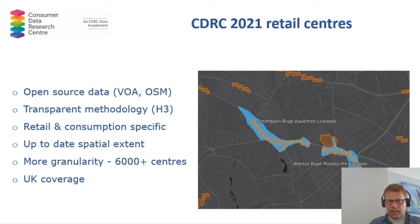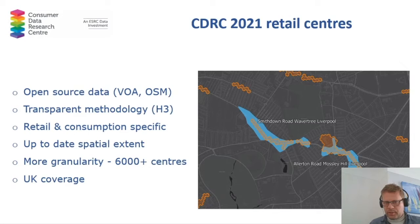Our retail centres are retail and consumption specific, so we do not include employment areas. The spatial extent is much better than previously and there is more granularity, with entire coverage of the UK. Looking at the same map as previously, we've got two centres — Needham Road and Allerton Road — shown in blue as the previous ones, and in orange you can see the new extent. The previous extent also included some residential areas due to a buffer, but now the spatial extent covers only the retail units pretty much as they are, and there are many more of them.